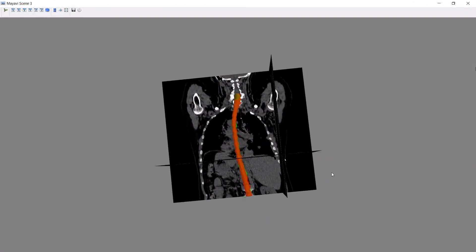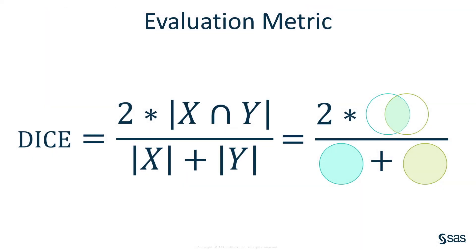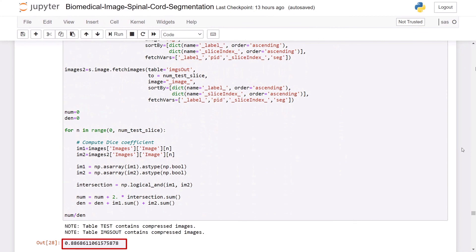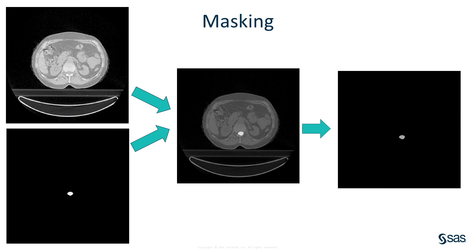Here, the predicted spinal cord region is shown in red and the ground truth region is displayed in green. The evaluation metric I'll be using is the DICE score. If X is the ground truth and Y is the predicted segmentation region, DICE is defined as 2 times the intersection of X and Y, all over X plus Y. A perfect DICE score is 100% and a completely imperfect DICE score is 0%. The current state-of-the-art DICE score for spinal cord image segmentation is around 95%. The DICE score for the test set predicted by this model is 89%.